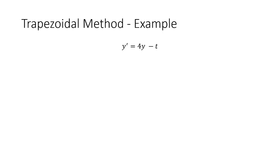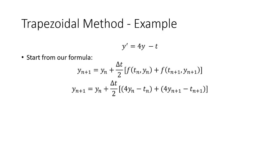Now, if we take this example ODE, y prime equals 4y minus t, and let's try to solve for an explicit solution with the trapezoidal method. We're going to start from our general formula here, just like what we just saw, and then we're going to plug in our function.